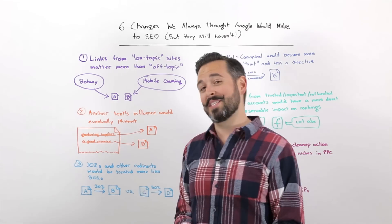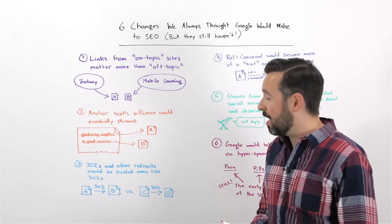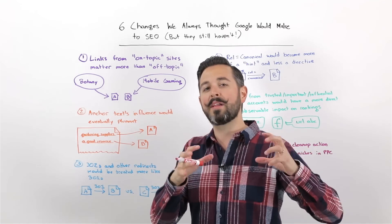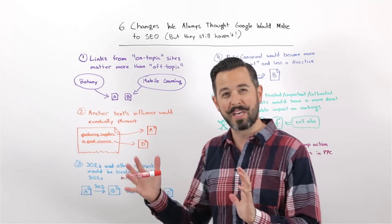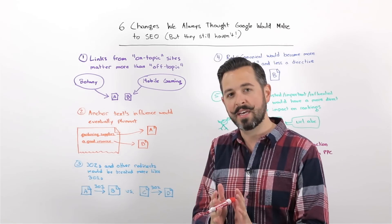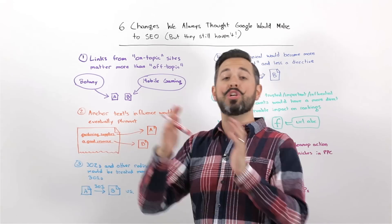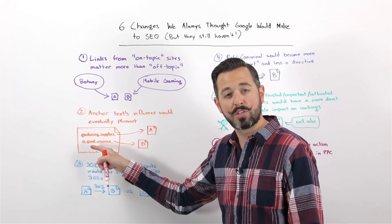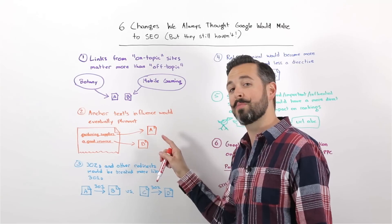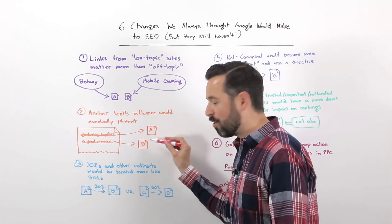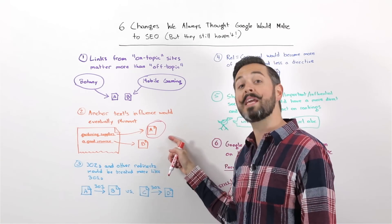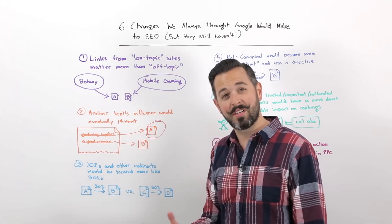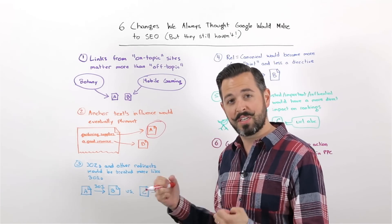Number two, I'm actually in this camp. I still think that someday it's coming, that anchor text's influence will eventually decline. And yet it seems to be that yes, while other signals have certainly risen in importance, and there have been lots of other things, it seems that anchor text inside a link is still far more important and better than generic anchor text, that getting specific, targeting something like gardening supplies when I link to A, as opposed to on the same page saying something like, oh, and this is also a good resource for gardening supplies, but all I linked with was the text, a good resource, over to B, that A is going to get a lot more ranking power. And all other things being equal, A will rank much higher than B, because this anchor text is still pretty influential. It has a fairly substantive effect.